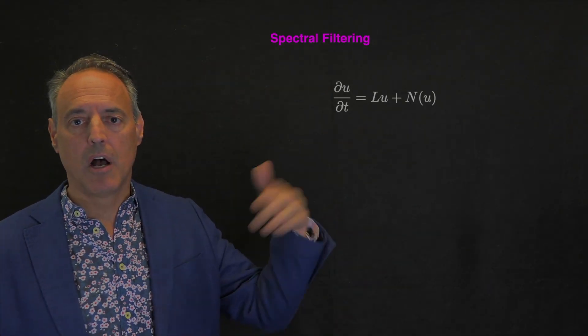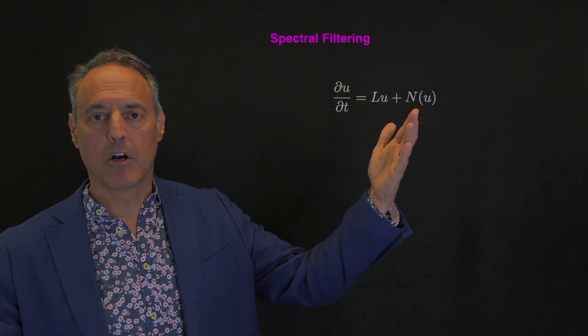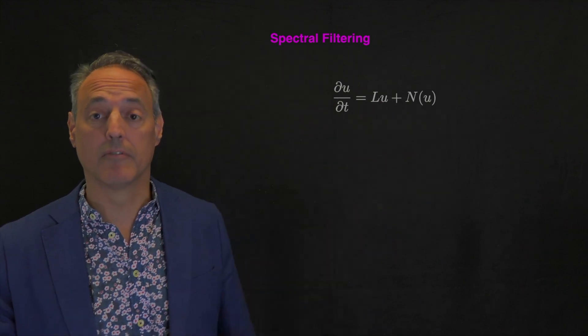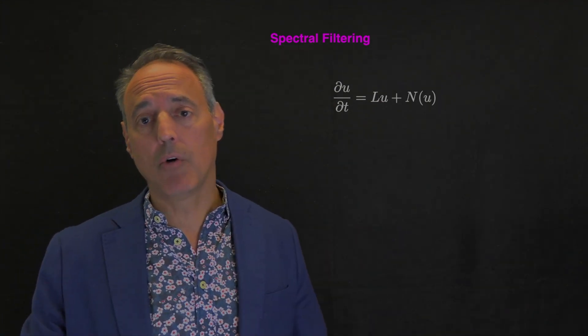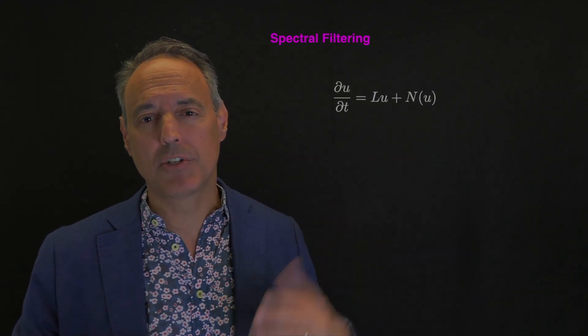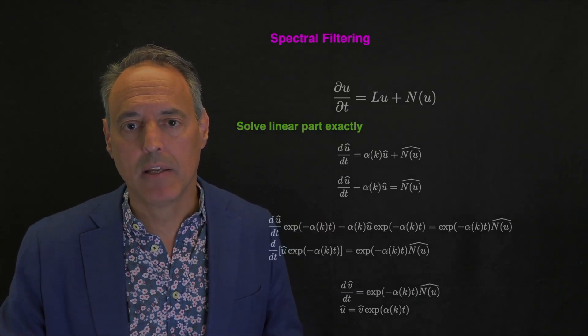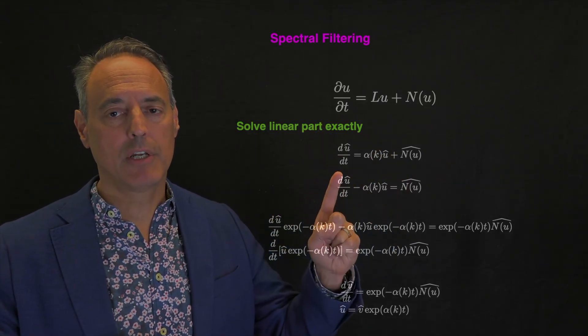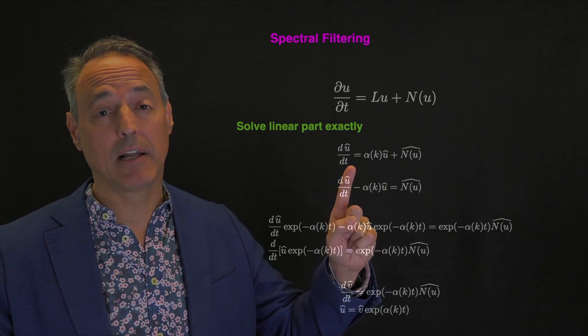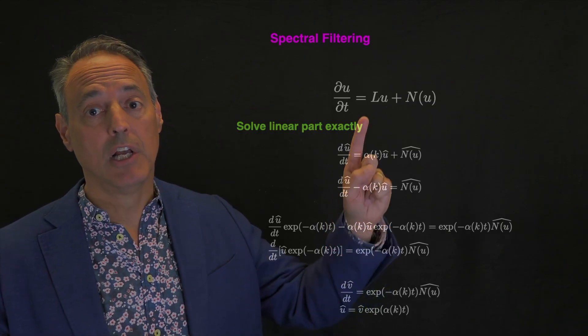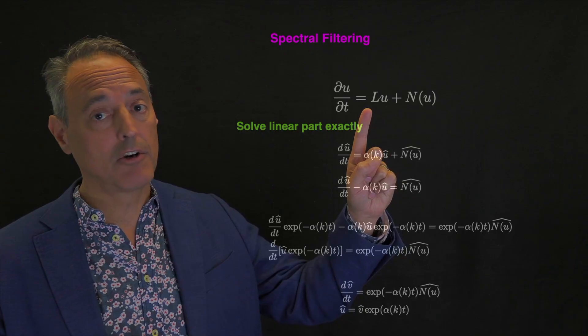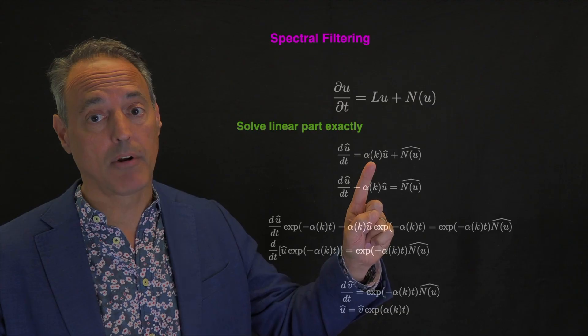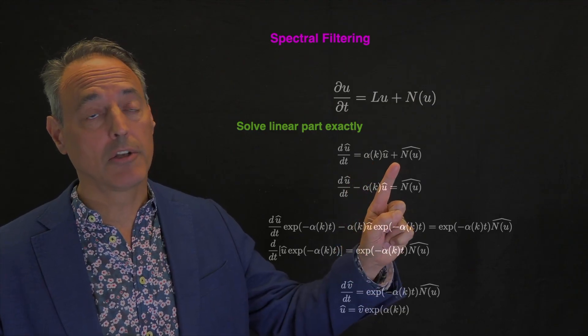This is exactly what we're going to use in this pseudo-spectral filtering method. We're going to say, for the linear term, maybe I can find an integrating factor so that I can explicitly solve for the linear term. Remember, the problematic term in your simulation was that fourth order derivative, which was linear. You can't use this technique if it's a non-linear higher order derivative term, but often the higher order derivatives are linear terms in a lot of our physics-based models. And what we want to do is say, well, I know how to solve that exactly. So take it out of the problem.